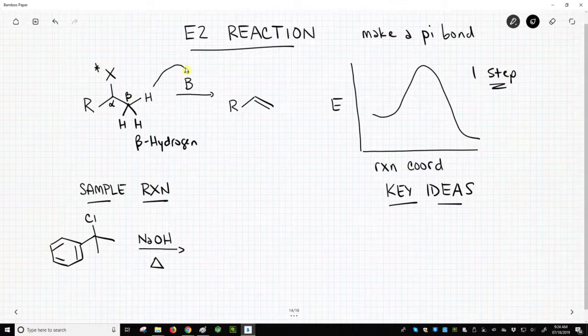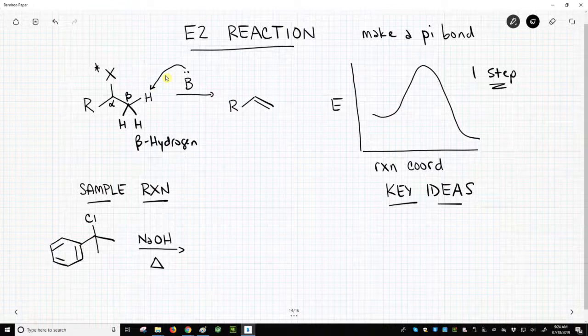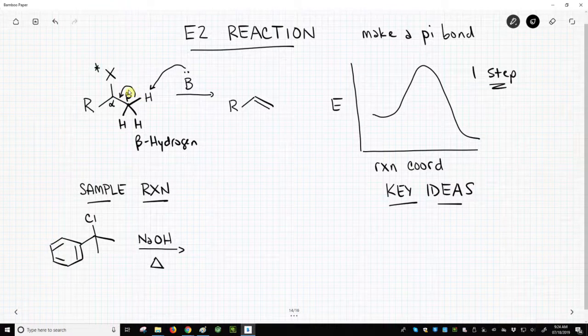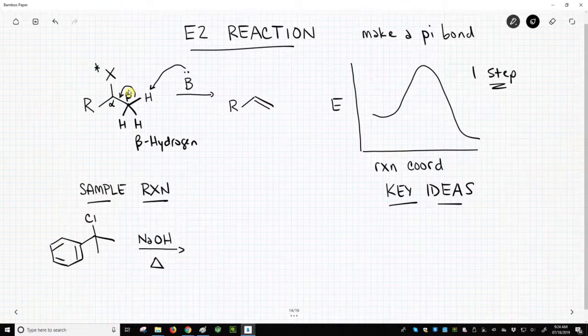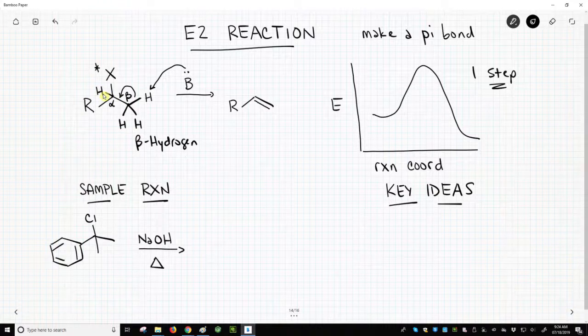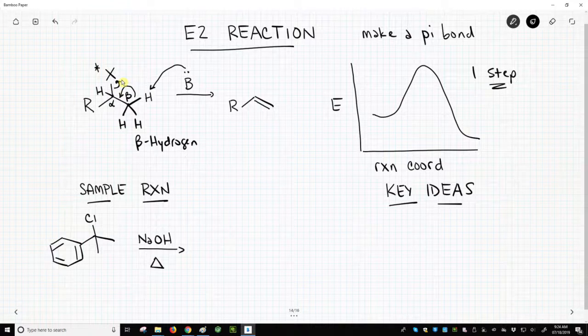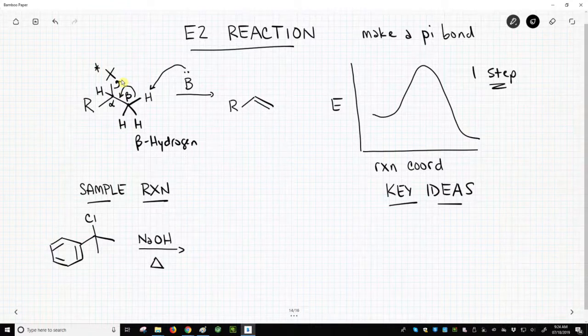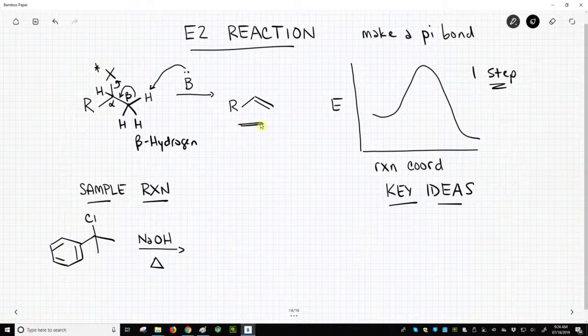So our base is going to come in and attack that hydrogen. Now hydrogen can only make one bond, so we're going to break this CH bond. And those electrons are going to become a bonding pair to make our pi bond between the alpha and beta carbons. And this carbon, I haven't drawn it in, but there's another hydrogen. It has four bonds. It has to lose a bond, and so we lose our leaving group. Our carbon halogen bond breaks, and that gives us a new alkene. We've done an elimination.